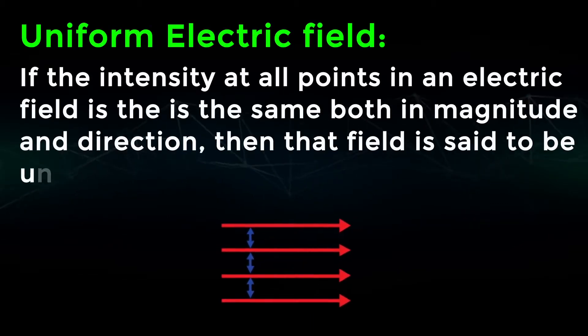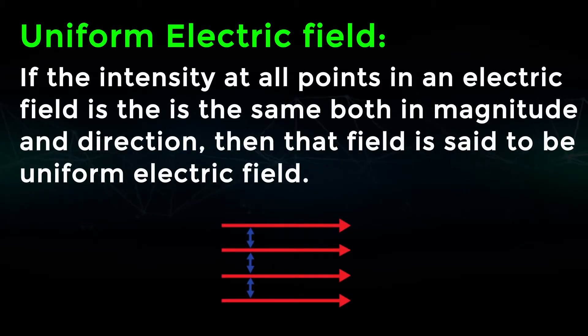Uniform electric field: If the intensity at all points in an electric field is the same, both in magnitude and direction, then that field is said to be a uniform electric field.